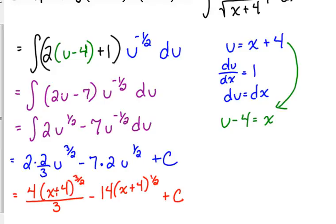So, they might, since they may factor out a square root of x plus 4. Okay? If they do that, that's going to leave you with 4 thirds times x plus 4 minus 14.